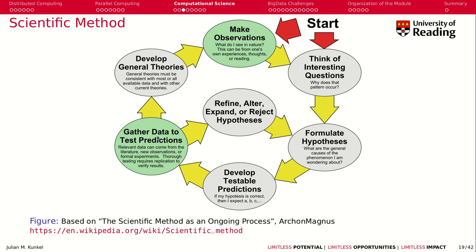If the data doesn't match, you will be able to refine, alter, expand, or reject the hypothesis you've made. This is kind of a cycle. And at some point, if you decide that it's true — that something like gravity exists — you want to expand this idea into more general theories. And those theories may lead to new observations, which is another cycle.